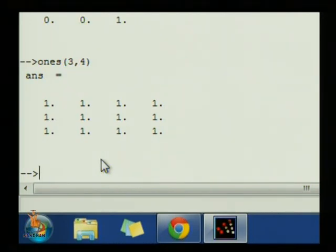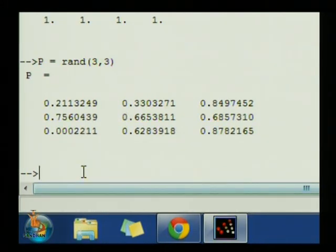Now, next, I want to define a matrix with a random number. I do not have specification which element should be of which number. I want to generate the random numbers. For that, I have one function called RAND for the random. What I can do is, let us assign one new matrix called P equals to RAND. It will generate the random numbers.